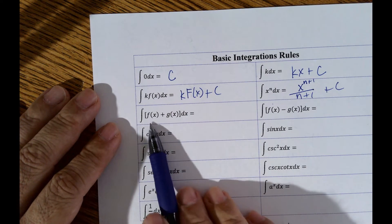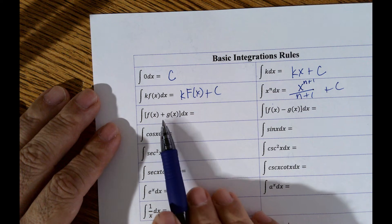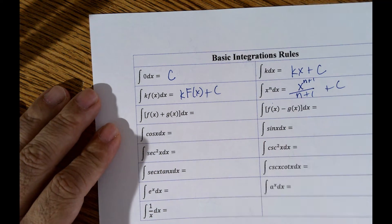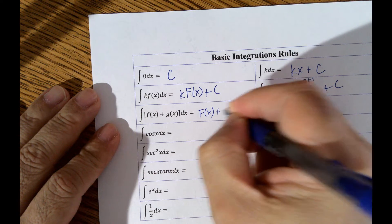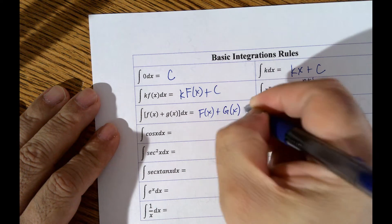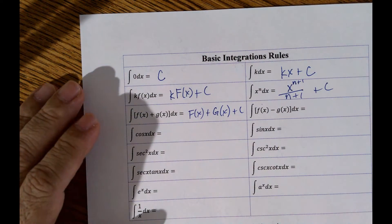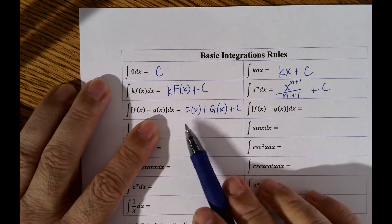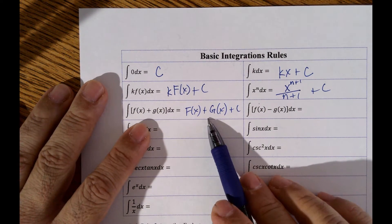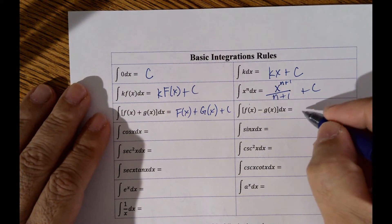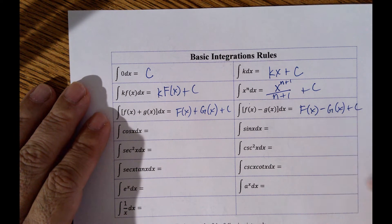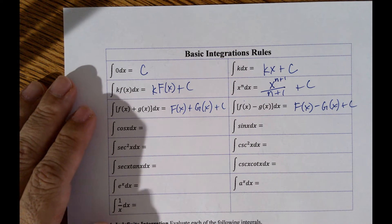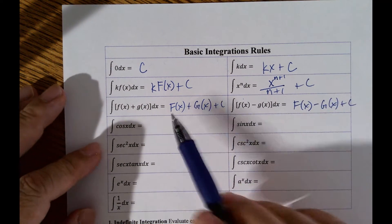What is the integral when you have two functions added together? You find the anti-derivatives and add them together, plus a constant. Basically, if you have to add two functions, when you integrate them you're still adding them. Same with subtraction: the integral of f of x minus g of x gives you their anti-derivatives subtracted, plus C.